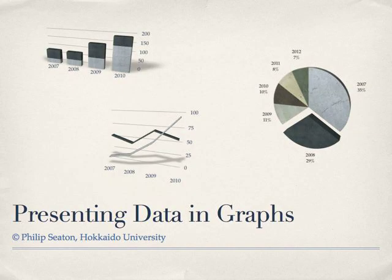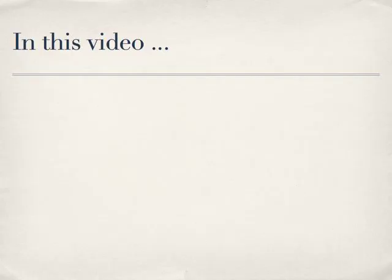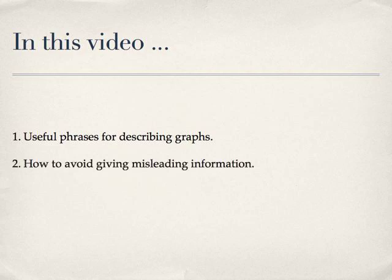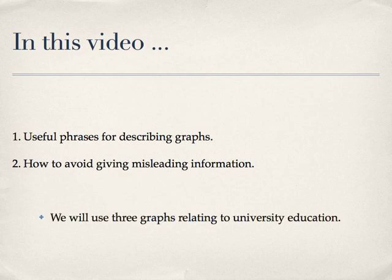In this final video in the academic writing series, we will look at how to present data in graphs. There are two particular aspects we will look at: first, some of the useful phrases you can use to describe graphs, and second, how to avoid giving misleading information. We will be using three different graphs as examples, all relating to a field you should have some interest in: university education.